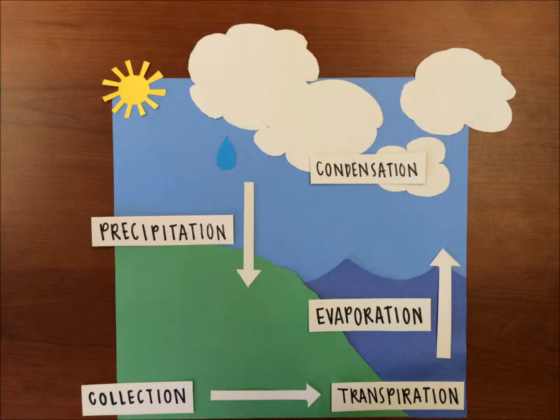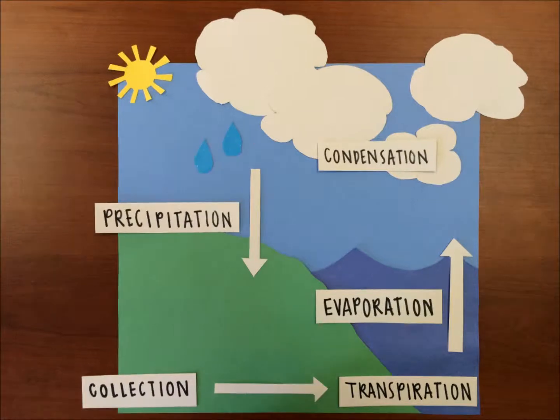Finally, we have precipitation. Precipitation is when the clouds get heavy and water falls back to the earth in the form of rain, hail, sleet, or snow.